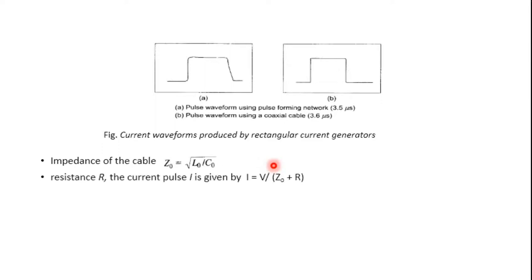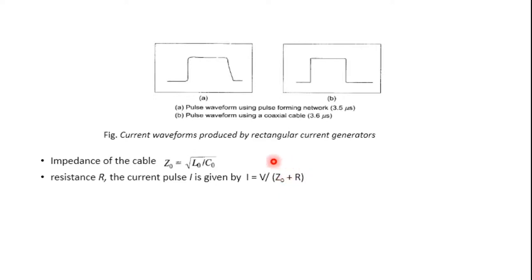The cable is charged to a particular voltage V, and R is the resistance of the test object under test. The current pulse I is given as I = V/R, where the total impedance is the impedance of the cable plus the impedance of the test object.